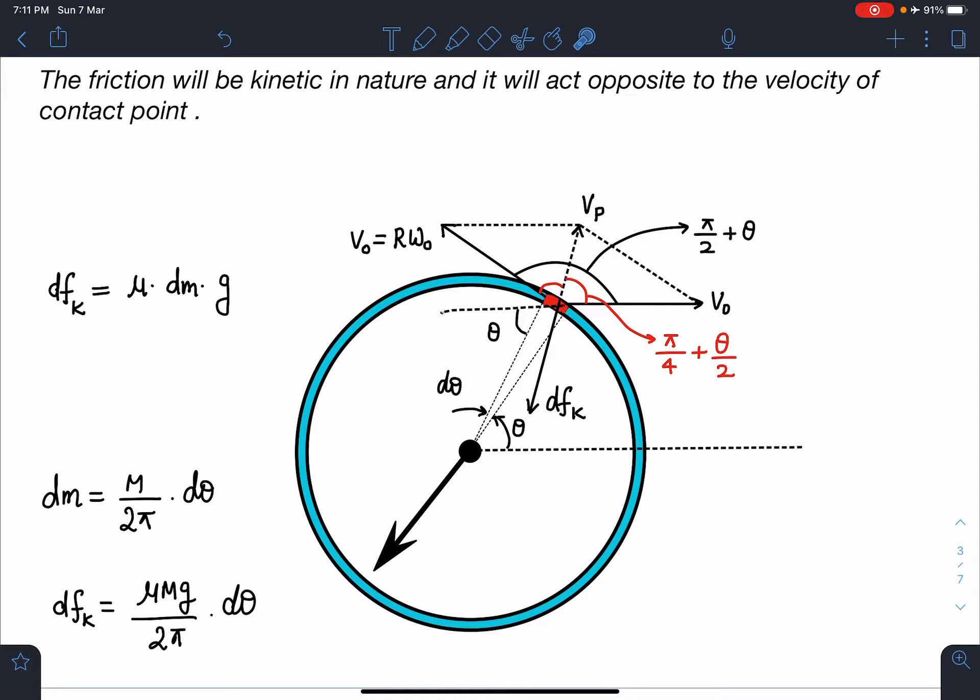If you see this part carefully, this angle is θ, so this angle is going to be θ, and this angle is 90 minus θ. If this angle is 90 minus θ, this entire angle will be 90 plus θ, which is π/2 plus θ. By symmetry I can say, since these two components are equal, the velocity Vₚ will be along the bisector of this angle. This angle becomes π/4 plus θ/2, and friction is going to act opposite to this Vₚ.